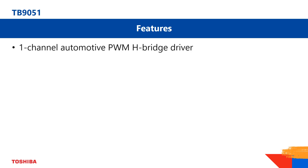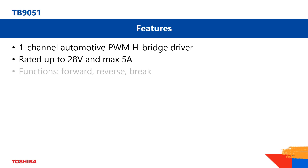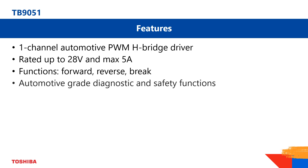The TB9051 features a one-channel H-bridge with integrated MOSFETs, which is able to drive up to 28 volts and 5 amperes to the attached motor. Besides the standard functions like forward, reverse, and brake, and automotive grade safety functions like over-current and over-temperature, it gives the user the possibility to monitor the high side current flowing through the motor coils in real time.